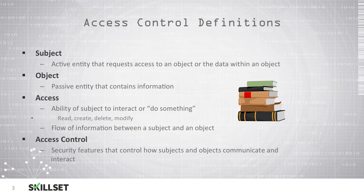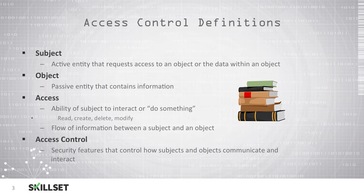Let's take a look at how all of these work together. Alice is our subject. She would like to view or access her company's vacation policy, which is an object. Based upon the access control features put in place by her administrators, Alice does have permission to read this document, but does not have permission to edit the document.